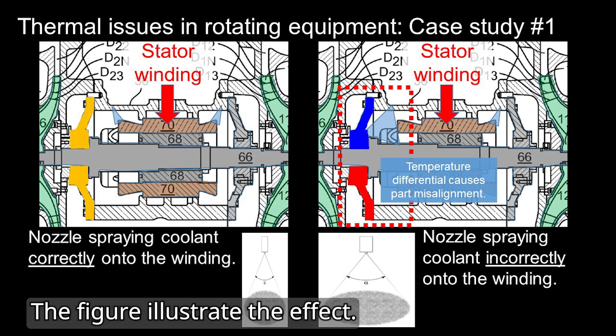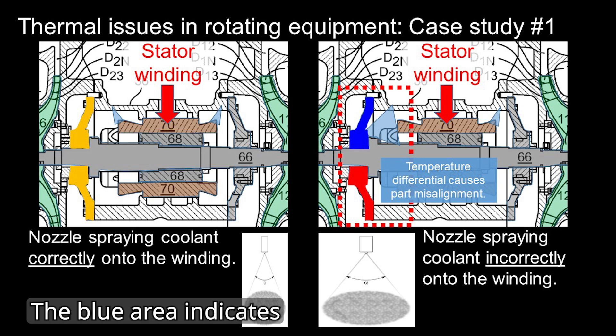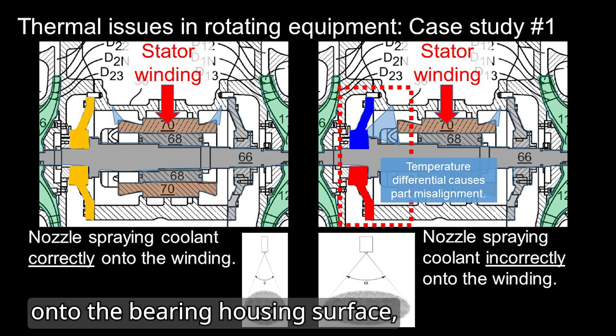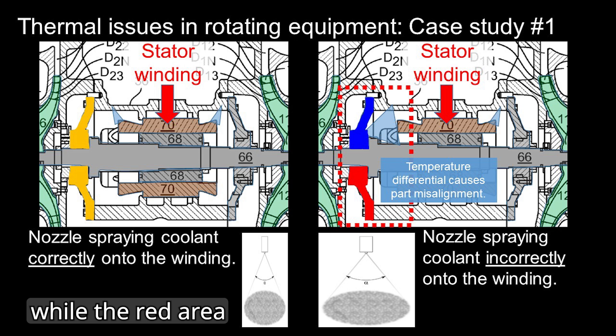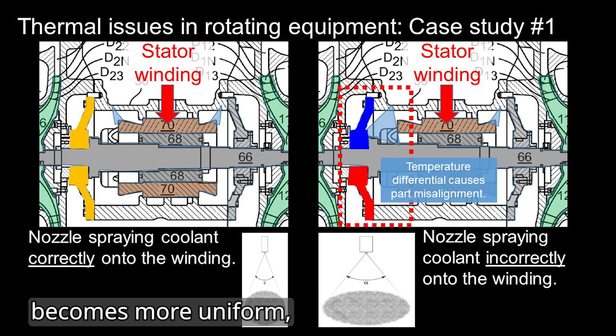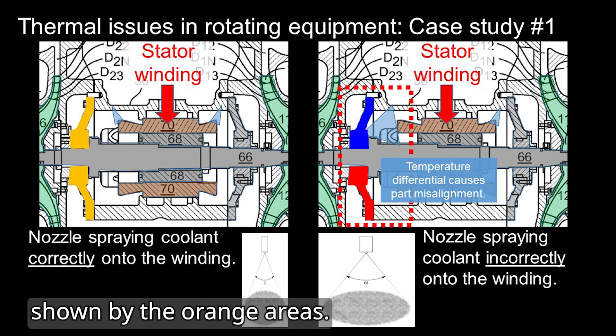The figure illustrates the effect. The blue area indicates cooling from the nozzle spraying liquid onto the bearing housing surface, while the red area represents hotter regions. With the nozzle properly aligned to the motor winding, the bearing housing temperature becomes more uniform, shown by the orange areas.